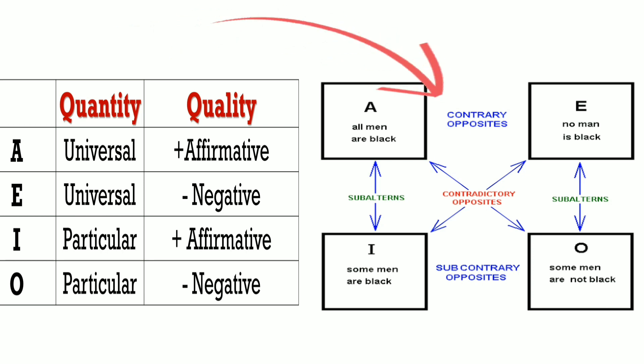According to E, 'No man is black.' The idea is negative but it covers the whole — 'no man' means the whole, and it is negative. So it is universal negative. You can also express E as 'All men are not black' — it is still an E proposition.